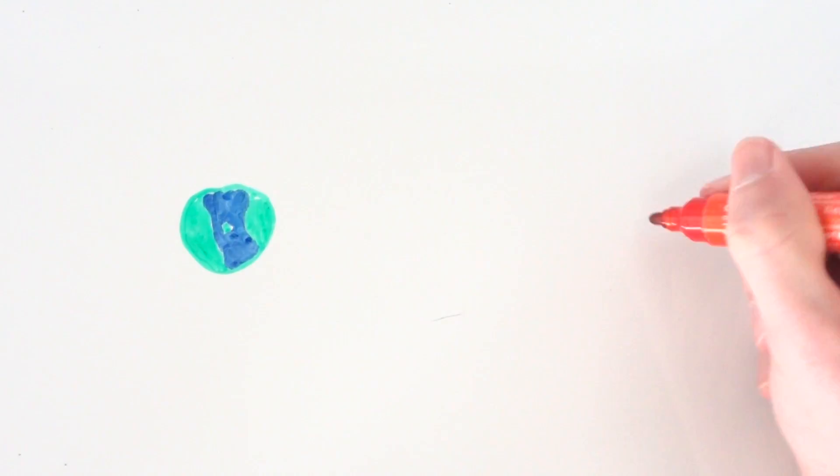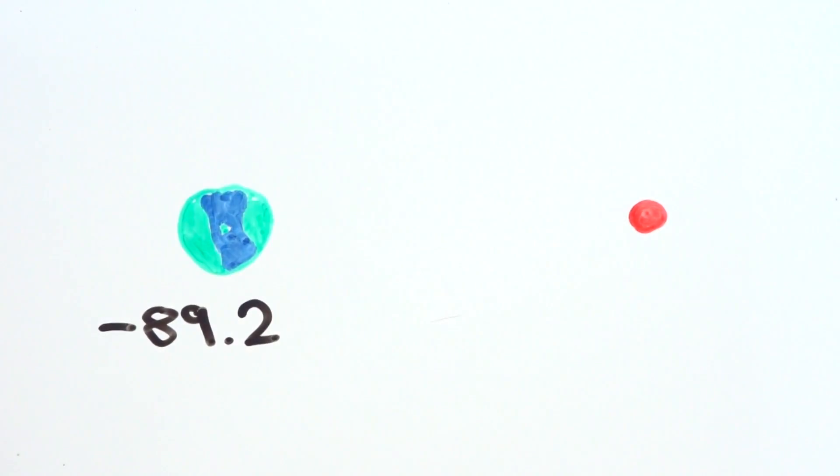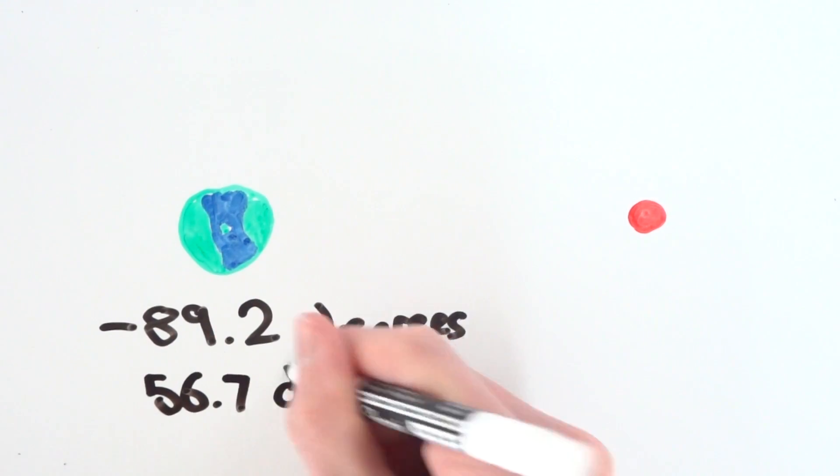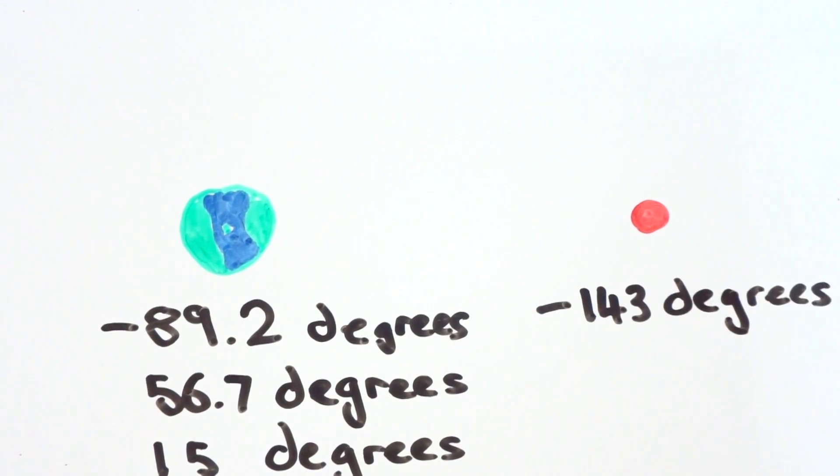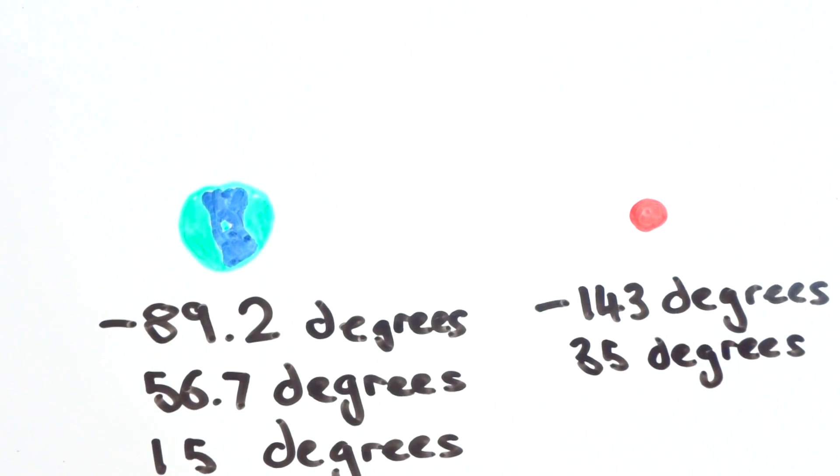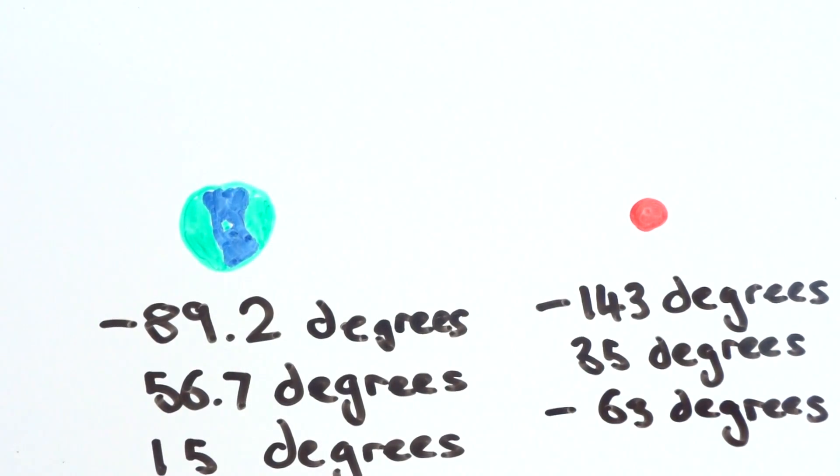Once we're on Mars, it's not going to treat us kindly. Our minimum temperature on Earth is negative 89.2 degrees, and our maximum is 56.7 degrees, which leaves a mean of 15 degrees. Mars has a minimum of negative 143 degrees and a maximum of 35 degrees, which means that the mean temperature is negative 63 degrees, which is pretty cold.